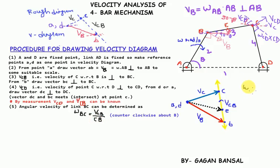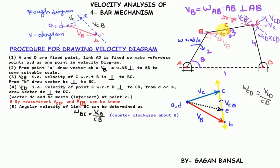Similarly, if you want to calculate omega of CD, it will be velocity of C with respect to D divided by CD. This vcd is vector dc, and CD is known to us, so we can calculate the angular velocity of all other links.